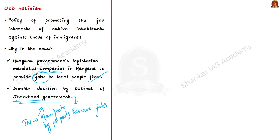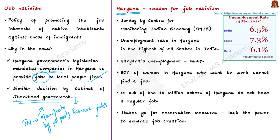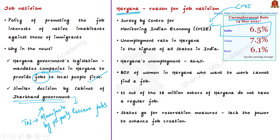To understand why states are opting for job nativism, the author takes the example of Haryana. Unemployment is a situation when a person actively searches for a job and is unable to find work, measured by the unemployment rate — unemployed workers divided by total labor force, multiplied by 100. As per recent CMIE estimates as of 14 March 2021, India's unemployment rate is 6.5%, with 7.3% in urban areas and 6.1% in rural areas.